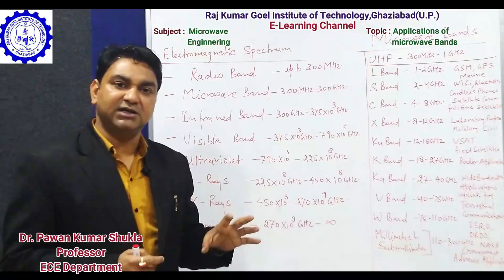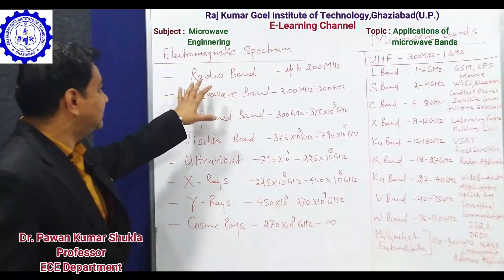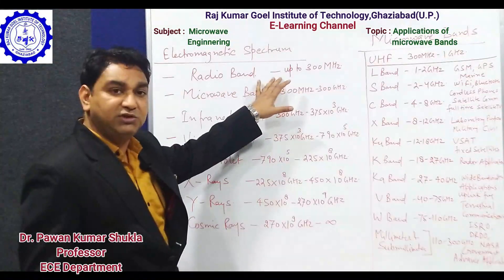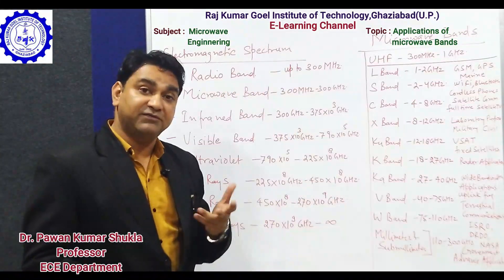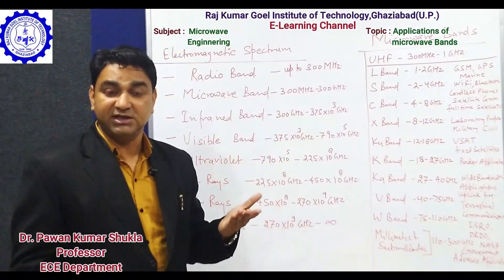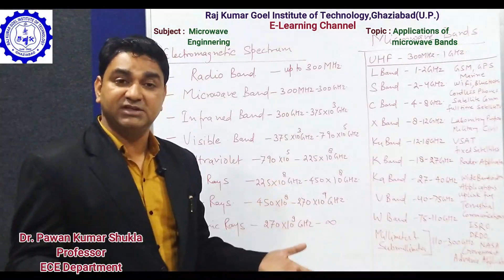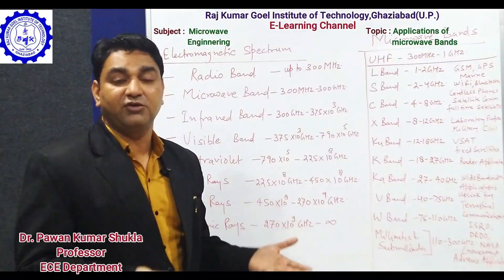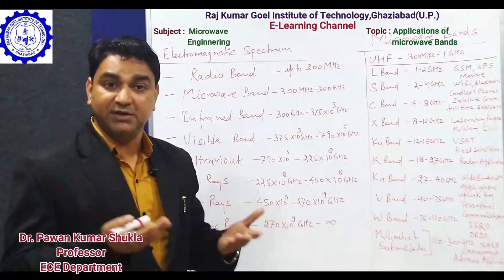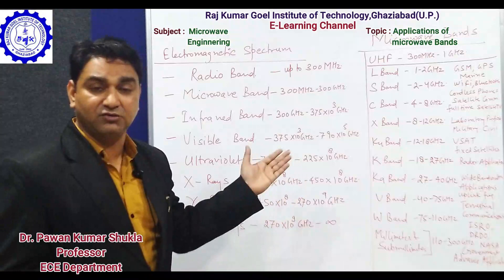When we start studying communications, we first discuss the radio band, which is limited up to 300 megahertz. After that, going upward in the frequency range of the electromagnetic spectrum, we see that a large range of frequencies can be utilized for communication purposes, device manufacturing and fabrication, and different high-frequency applications used nowadays in microwaves.